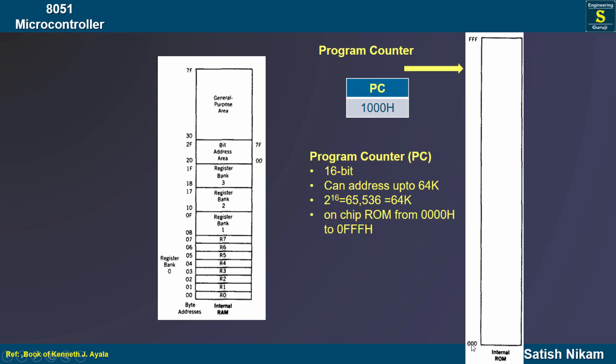The on-chip ROM address range is 000H to FFFH. If required, we can connect external ROM up to 64K. How to connect external ROM and RAM to the 8051 microcontroller — that part we will discuss in the next coming lectures.